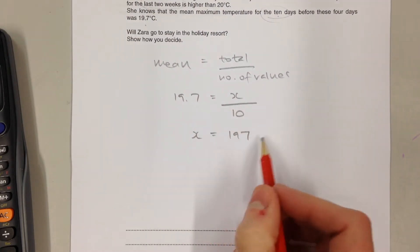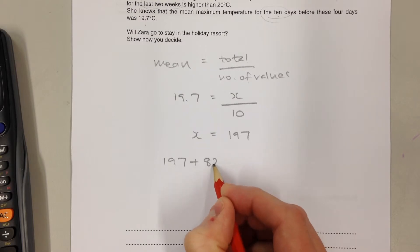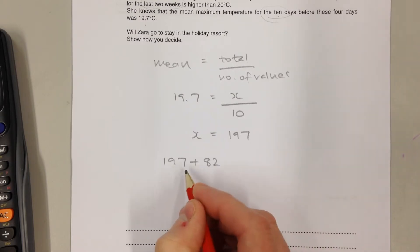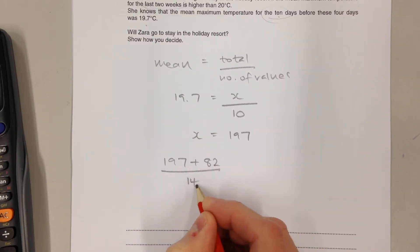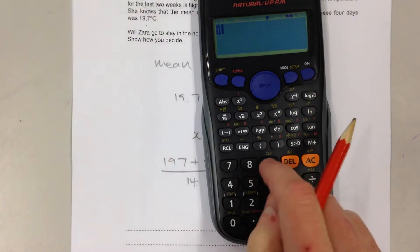Now we know that the first 10 days had a total temperature of 197. We can add on the total temperature of the last four days, which we worked out to be 82, and then divide that by 14 because altogether we've got 14 days. 197 plus 82 gives us a total temperature of 279.